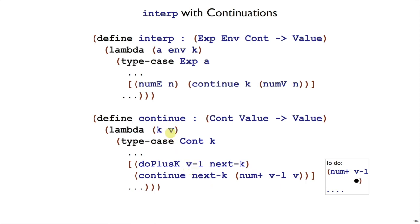By the time we get here, we've got a value. This v now is the value for the right expression. Our to-do list is numplus, used to be called v, I've renamed it to vl, because we had two different v's, but this vl is the one that is in the do plus k record. That's the value for the left expression, v is the value for the right expression, so we're ready to actually perform that addition, and then we can just continue on with the dots here. We can continue with the next k and that number value.